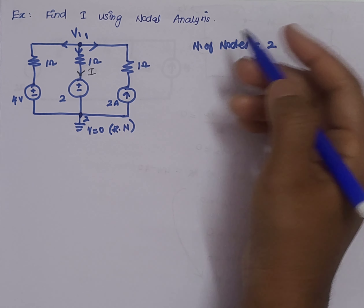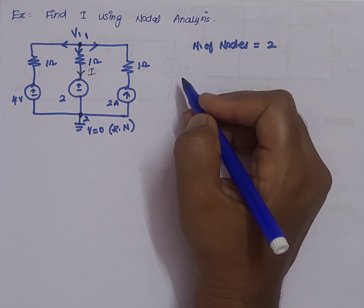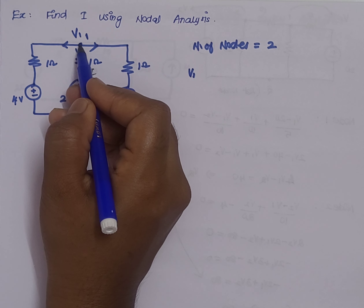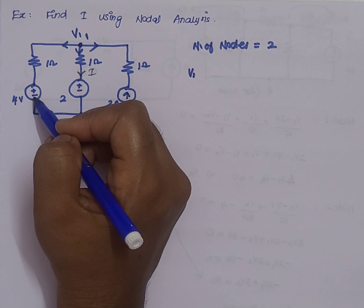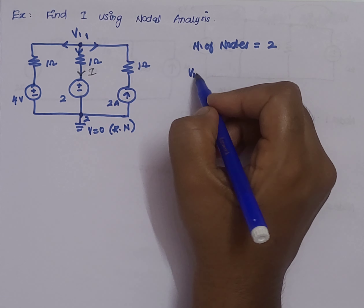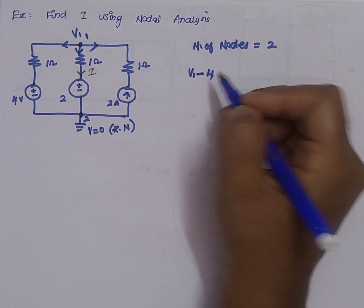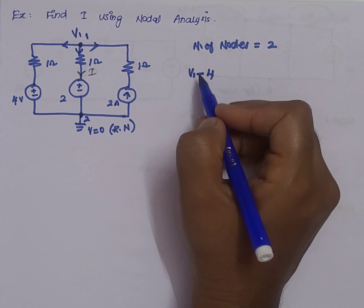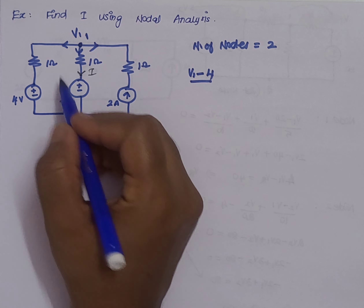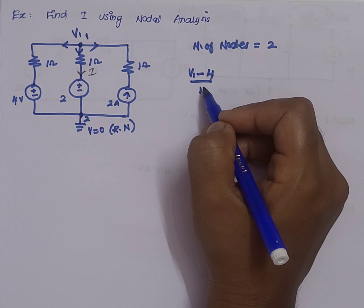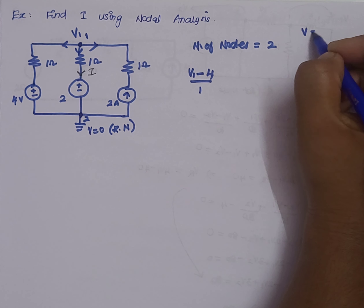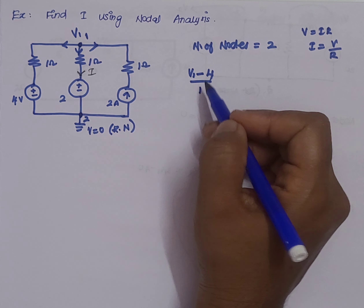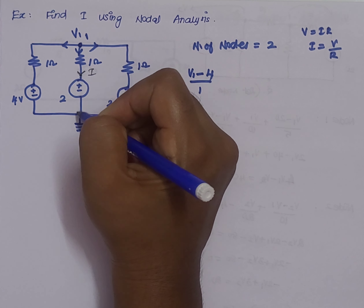Once the first step is done, we write the KCL equation for each node. Starting from node 1, the voltage is V1. Looking at the voltage source of 4V — since it goes from plus to minus there is a voltage drop — the branch current is (V1 − 4) / 1. As per KCL, current is represented as V/R for each branch.